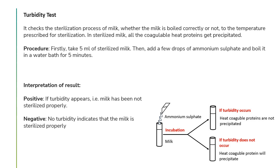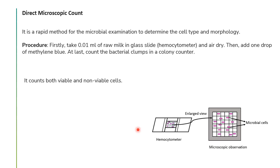The direct microscope count uses raw milk and is a rapid method for microbial examination to determine cell type and morphology. Procedure: take 0.01 ml of raw milk on a hemocytometer glass slide, air dry and let it settle, add one drop of methylene blue to stain the microbial load, then count the bacterial clumps using a colony counter. An important distinction from the standard plate count method is that here you can count both viable and non-viable cells.